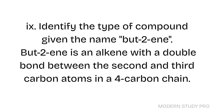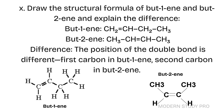Short Question 9: Identify the type of compound given the name but-2-ene. But-2-ene is an alkene with a double bond between the second and third carbon atoms in a four-carbon chain. Short Question 10: Draw the structural formula of but-1-ene and but-2-ene and explain the difference. The difference is the position of the double bond — on the first carbon in but-1-ene, and on the second carbon in but-2-ene.